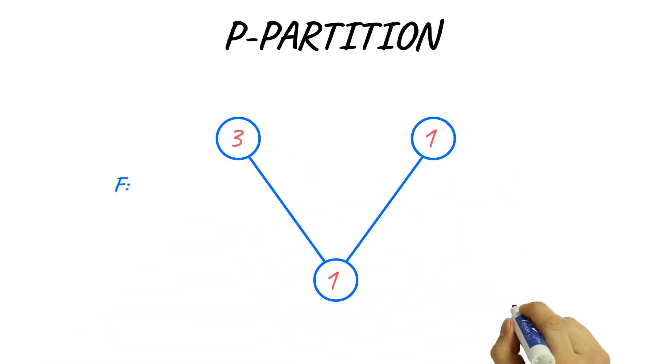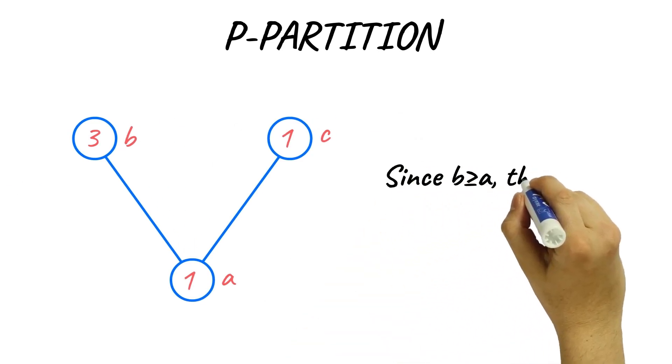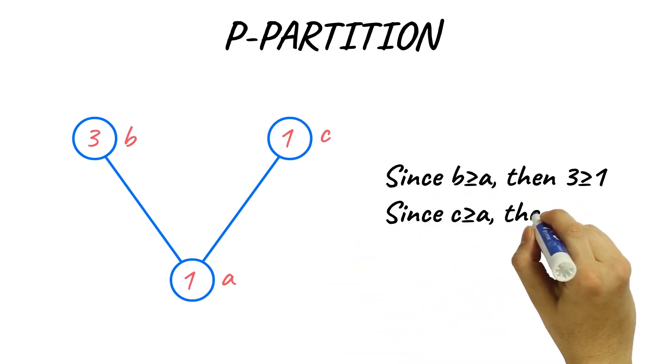Associate numbers with each element, making a PoSet partition. Where possible, we compare elements. We can compare A with B and C. B and C are not comparable.